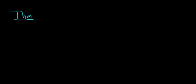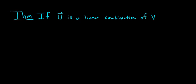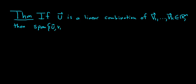In this video we're going to talk about some theorems on spans — really important stuff. The first theorem says that if you have a vector u which is a linear combination of some other vectors v sub 1 through v sub k, all vectors in R^n, then the span of u along with those other vectors is just the span of the other vectors.